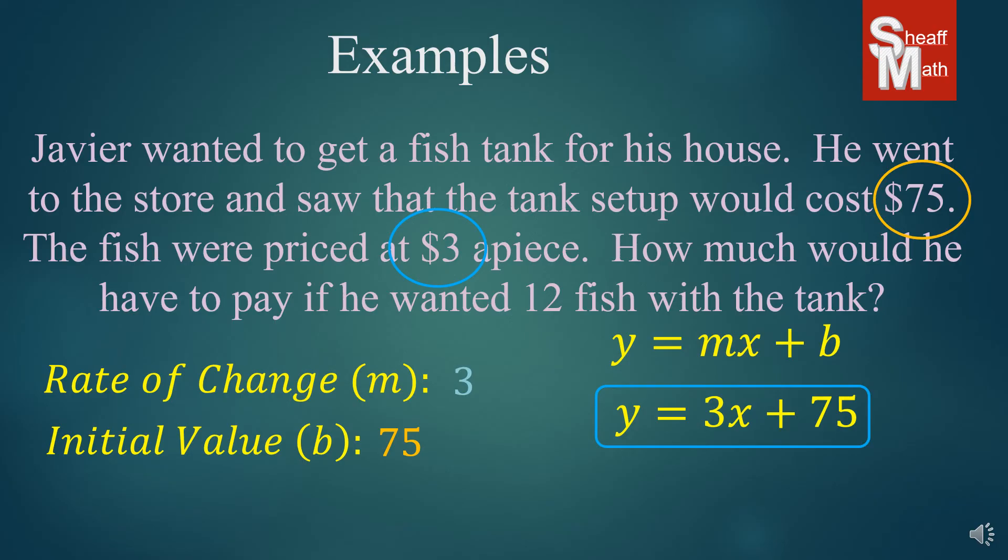And so in this particular problem, it wants to know how much it would cost with 12 fish. And so we put 12 in for x, multiply $3 times 12 fish, 36. We add 75 and we get 111, I think. You'll have to double check that later. And so that's how we set it up for this one.